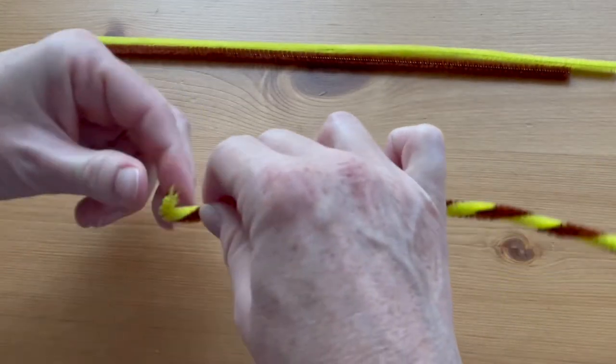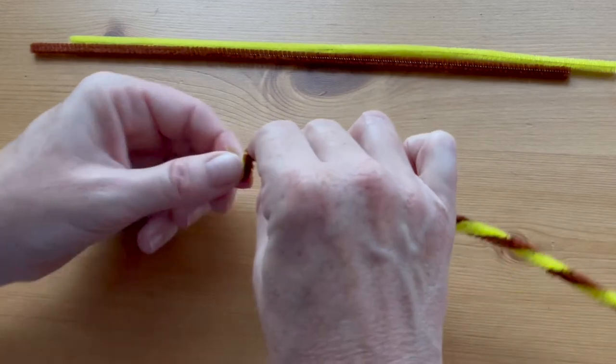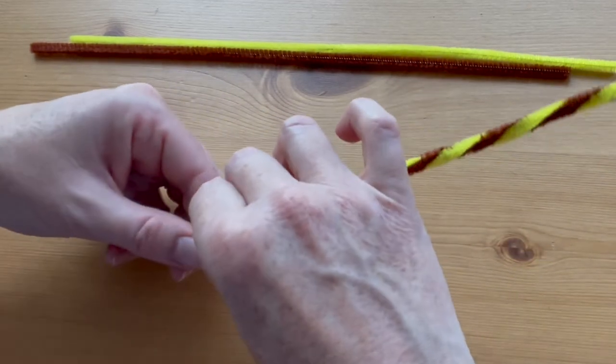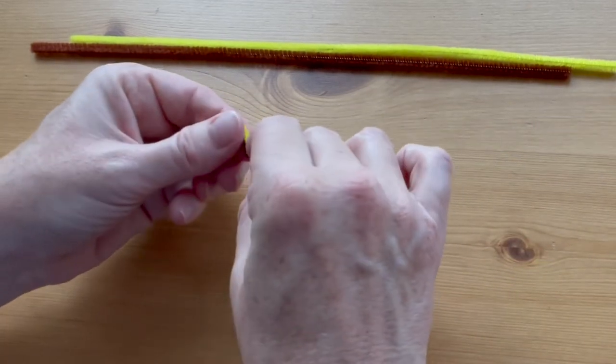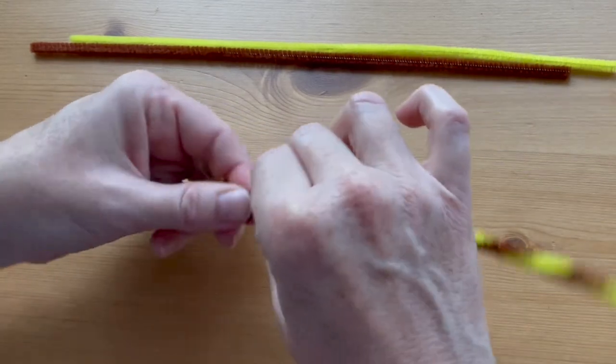Starting at one end, bend the twist into a zigzag. You want to make the bends small, maybe just about a quarter of an inch each. Do this through the whole length of the twist.